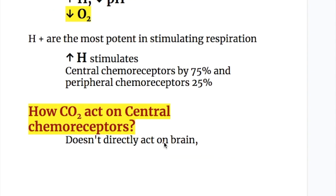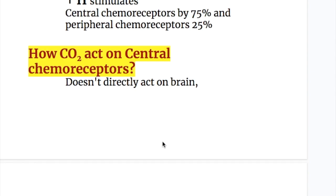Hydrogen ions are the most potent in stimulating respiration. Increased hydrogen ion stimulates central chemoreceptors by 75% and peripheral chemoreceptors by 25%.